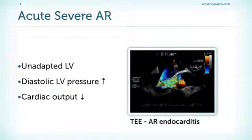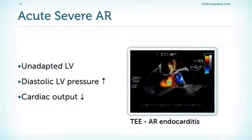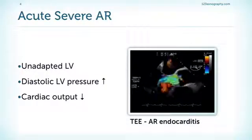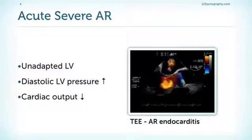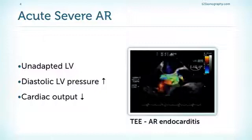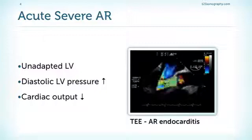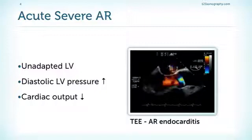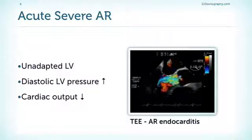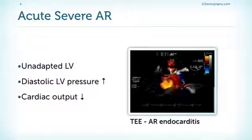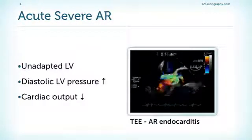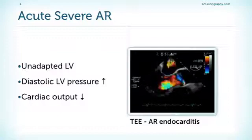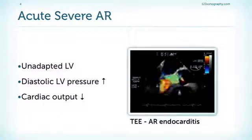From a hemodynamic point of view, the problem is that we have an unadapted left ventricle. The ventricle is small and cannot accommodate the large regurgitant volume. This can be caused by endocarditis, which then translates to the left atrium, and thereby causes pulmonary edema.